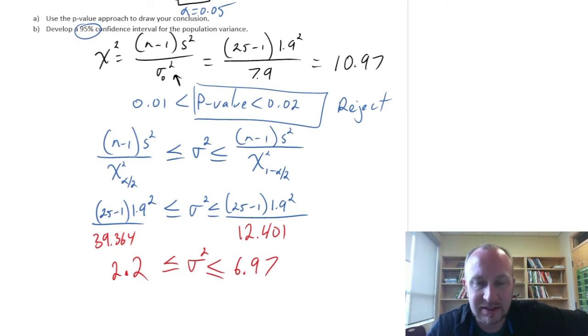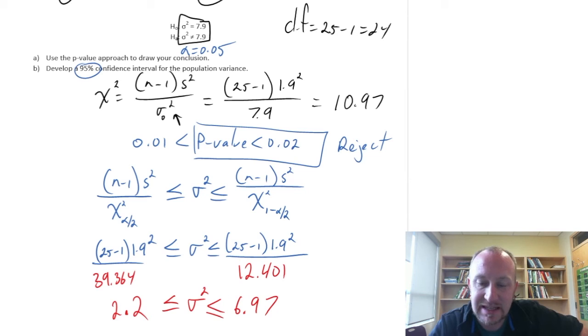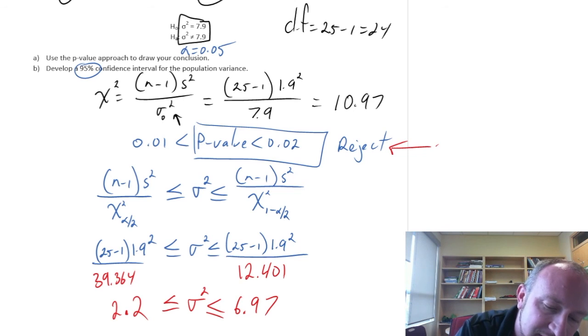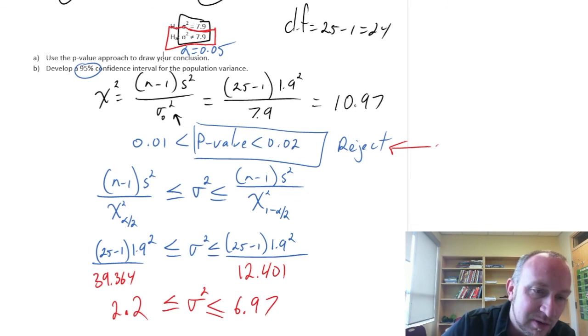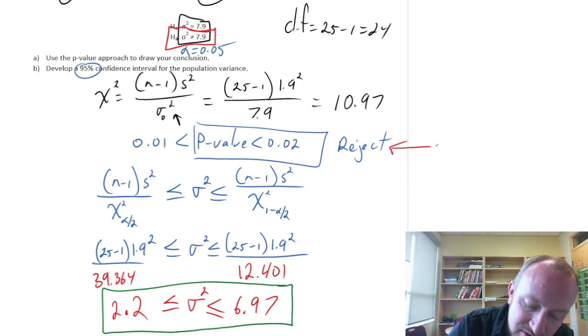So there we go. Our 95% confidence interval for the population variance is between 2.2 and 6.97. Is that consistent with our hypothesis test? Well, let's see. In that test, we had sufficient evidence to reject the null hypothesis, which says that the variance is not, at least at the 95% confidence or the alpha 0.05 level of significance. That is saying that it is not 7.9.